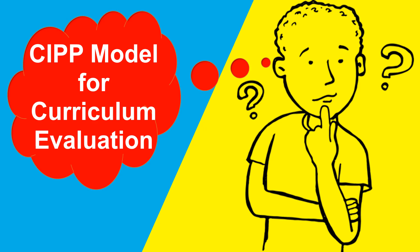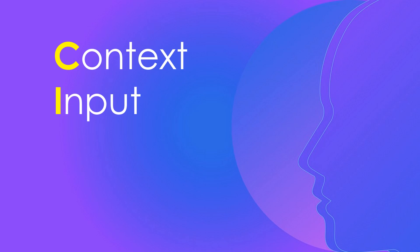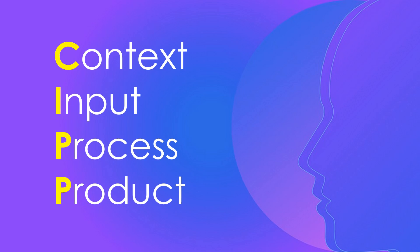Hello friends. In this video, I will provide a brief overview of the CIPP model for curriculum evaluation created by Daniel Stuffelbeam. CIPP is an acronym for context, input, process, and product. The CIPP evaluation model is widely used to evaluate a program, policy, or a curriculum.